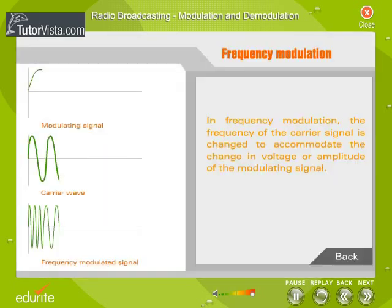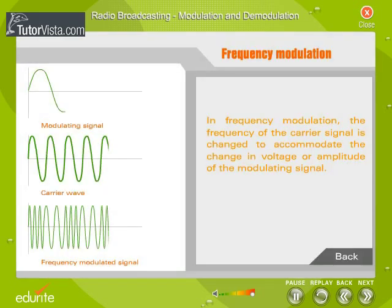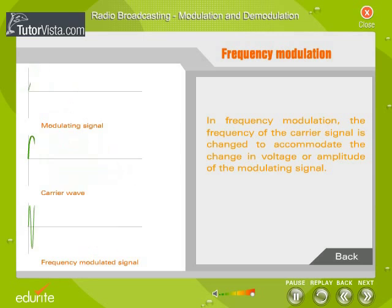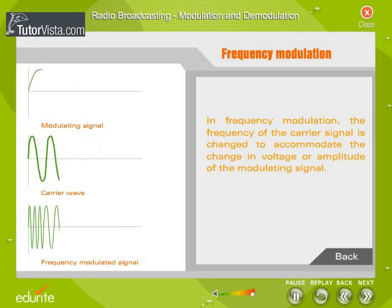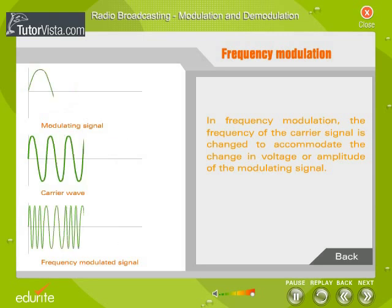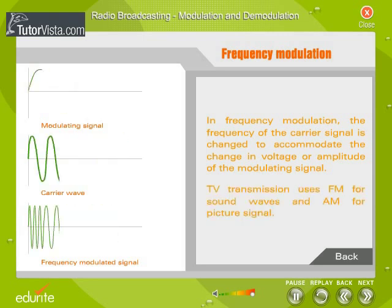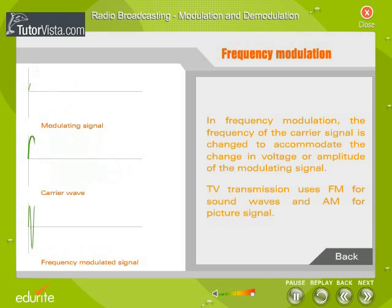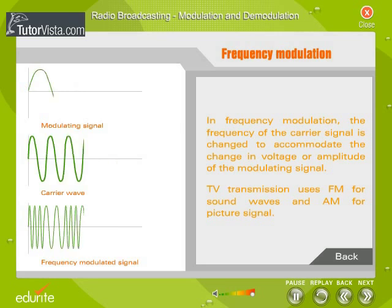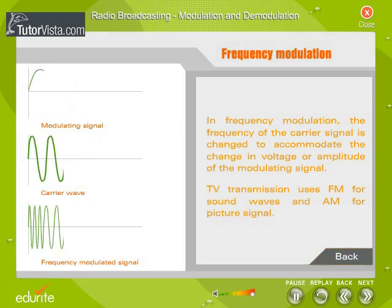Frequency Modulation: In frequency modulation, the frequency of the carrier signal is changed to accommodate the change in voltage or amplitude of the modulating signal. TV transmission uses FM for sound waves and AM for the picture signal.